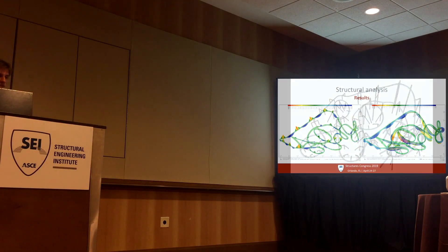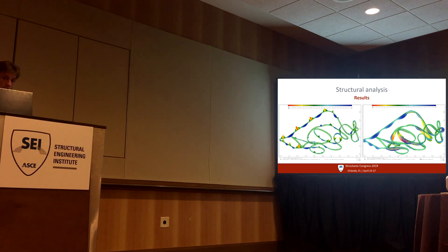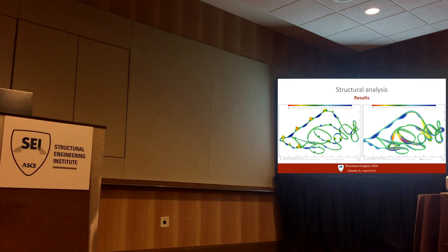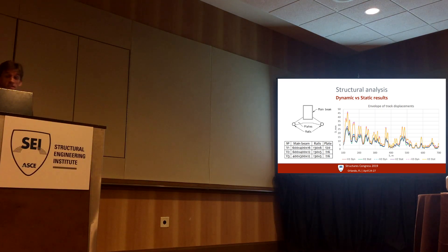Here are some visual results of the analysis: the bending moments at a particular time step and the total displacement vectors. Unfortunately, graphic representation of results is not very useful for comparison purposes. Therefore, the comparison was made by defining an envelope of displacement at every point of the track for three variants of track section shown in the table. Here are the plots for three variants, and you can see that the actual difference between static and dynamic analysis is surprisingly small.